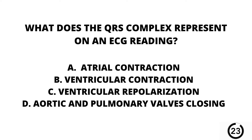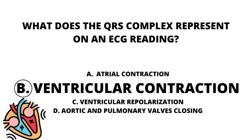Question 21. What does the QRS complex represent on an EKG reading? A. Atrial contraction. B. Ventricular contraction. C. Ventricular repolarization. Or D. Aortic and pulmonary valves closing. Our answer here is B. Ventricular contraction.